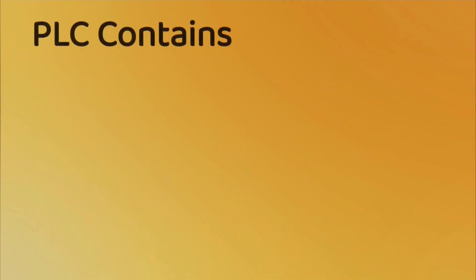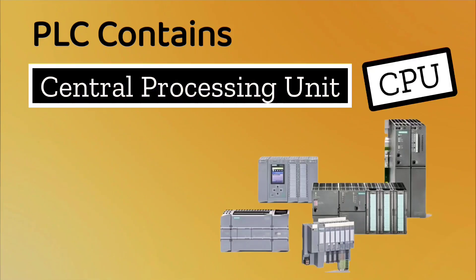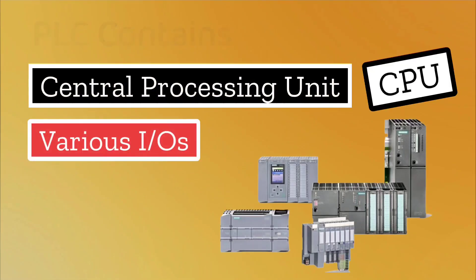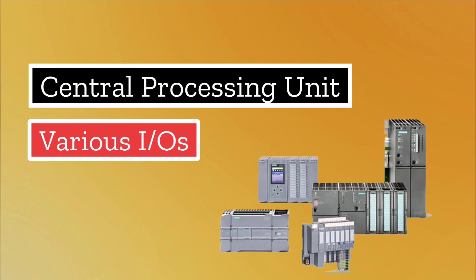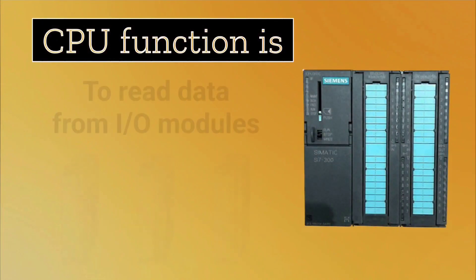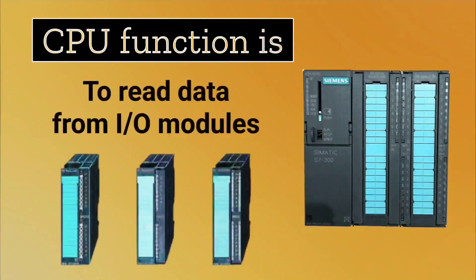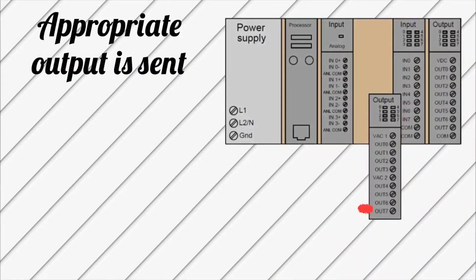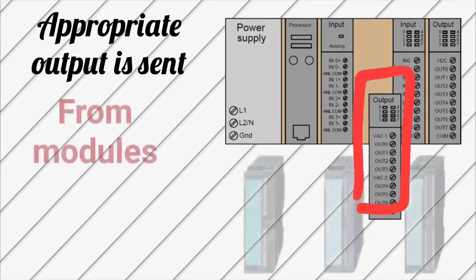In PLCs, one is the central processing unit, or CPU. There are various inputs and outputs — which are called IOs — there are modules, and associated software. The CPU functions by reading data from IOs, taking decisions according to the written program, and then sending the appropriate output to modules in the form of signals.